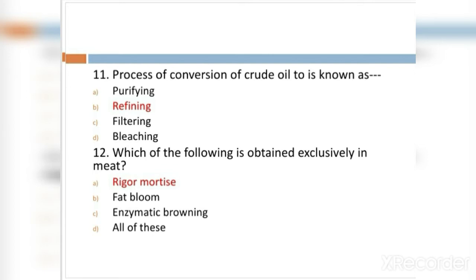MCQ 12: Which of the following is obtained exclusively in meat? Option A: rigor mortis. Option B: fat bloom. Option C: enzymatic browning. Option D: all of these. The right answer is rigor mortis.